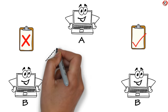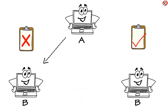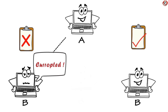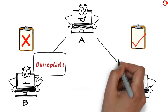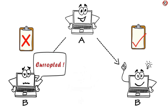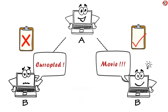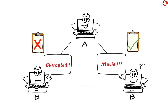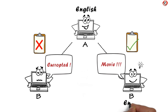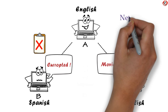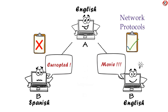In the first case, Computer B will pop up a message saying the file is corrupted. In the second case, Computer B would be able to understand the file as a movie. Data transfer in the second case is successful because both computers followed some guidelines — it is like both computers decided to speak English. So Network Protocols help to make effective connections among networking devices.